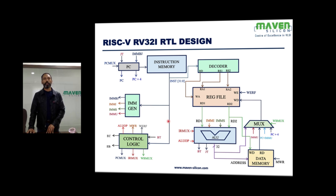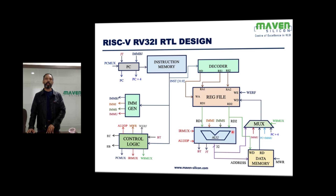Control logic is the one which is going to generate all control signals — it's going to define the ALU operation primarily, and it's going to control all the multiplexers. The ALU now has the MUX internally, so all the immediate values go to the ALU. It has the MUX inside, so it's going to choose the value between the source register and the immediate value. This MUX select is defined by control logic via the ALU operation signal.